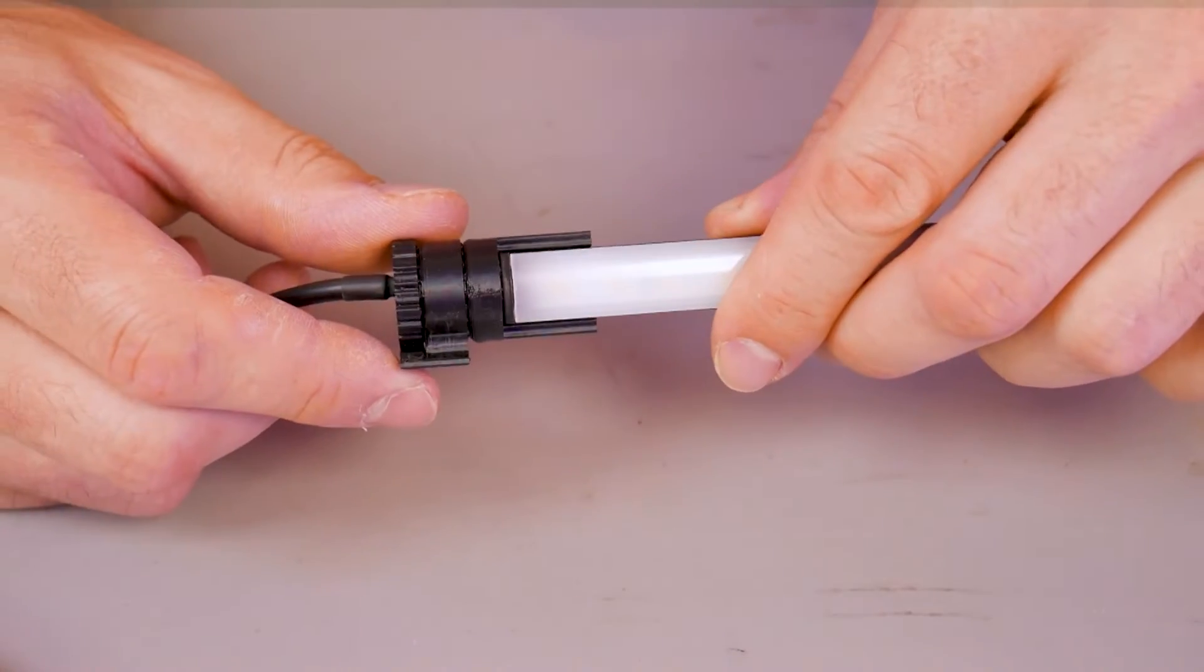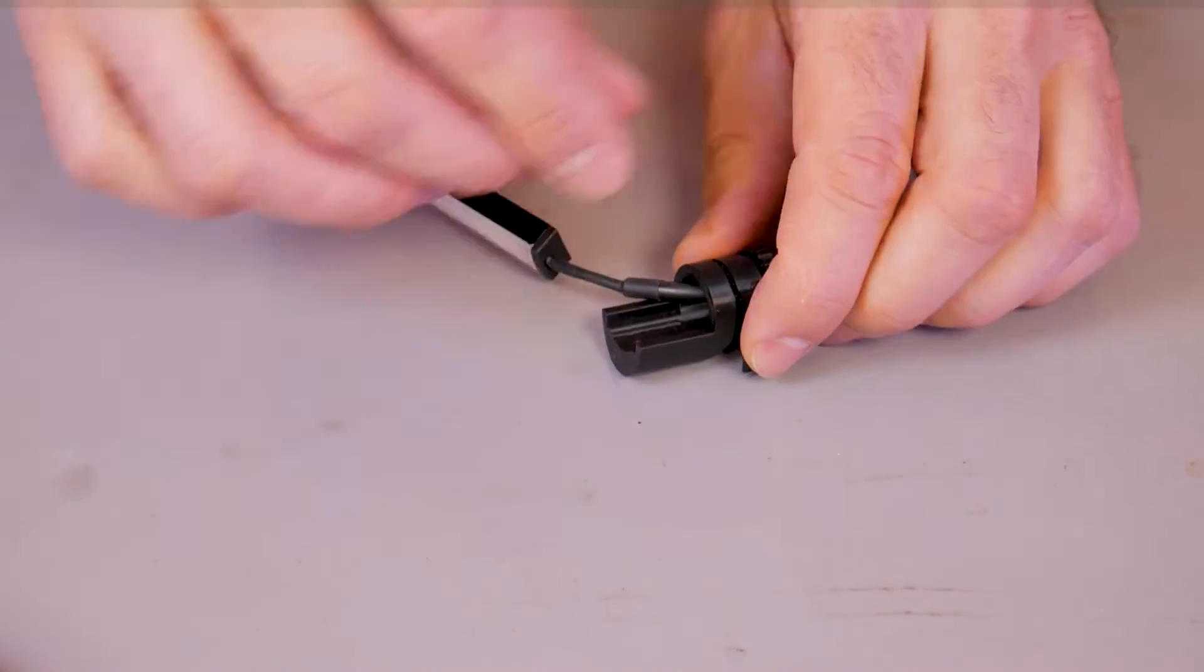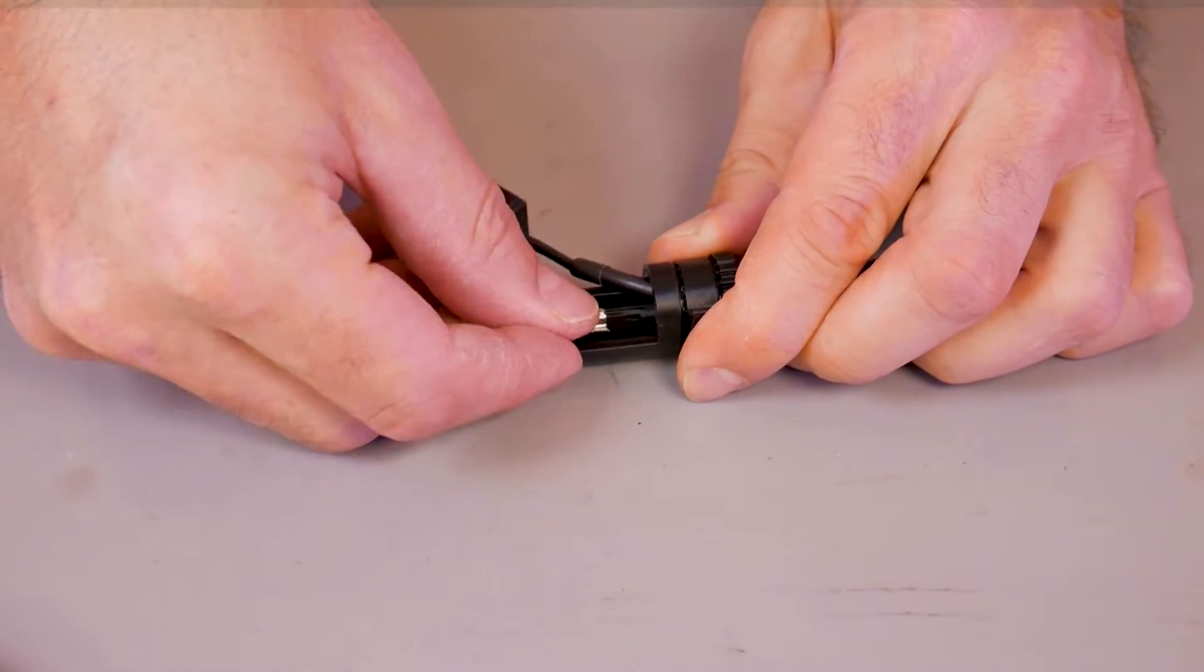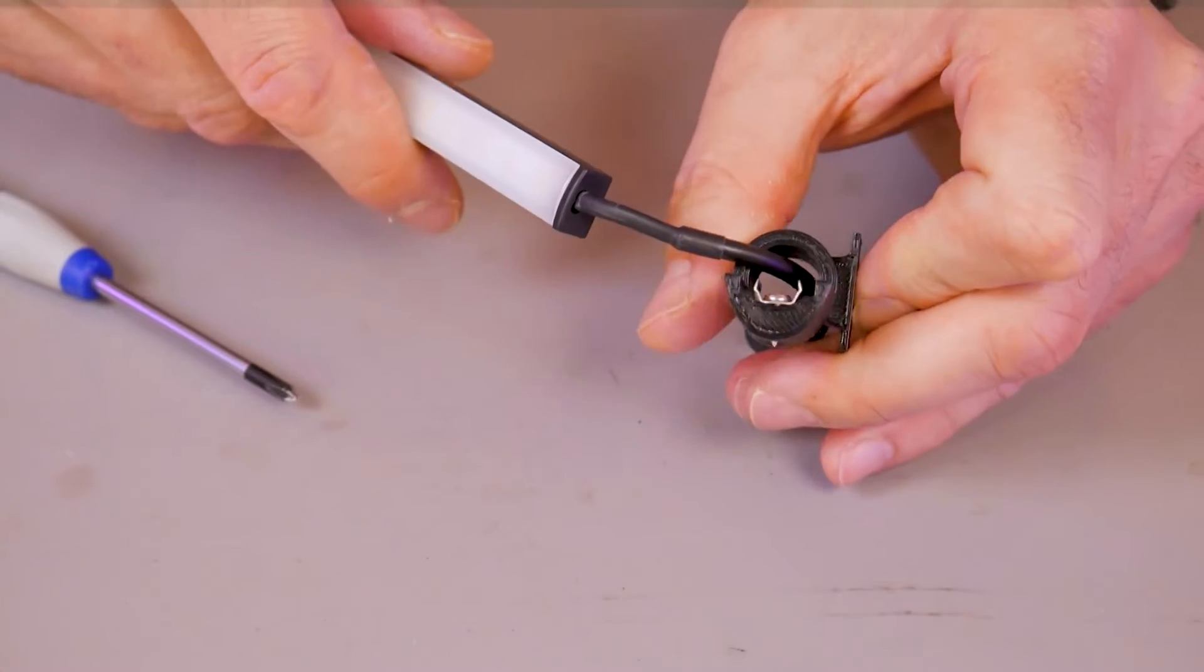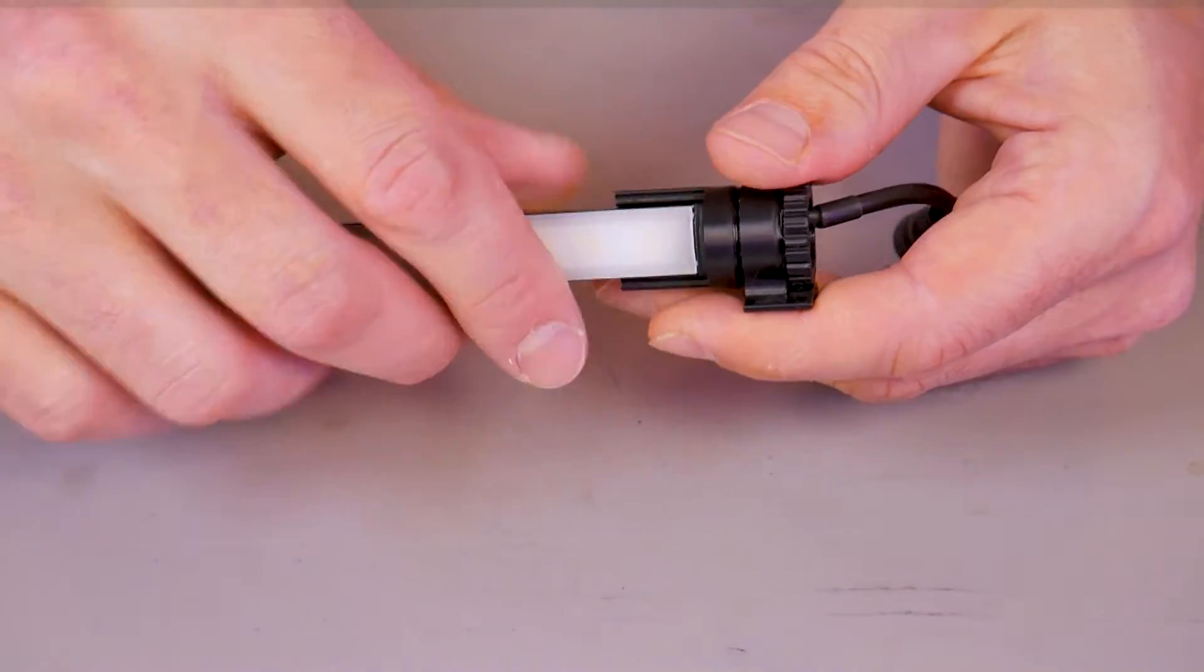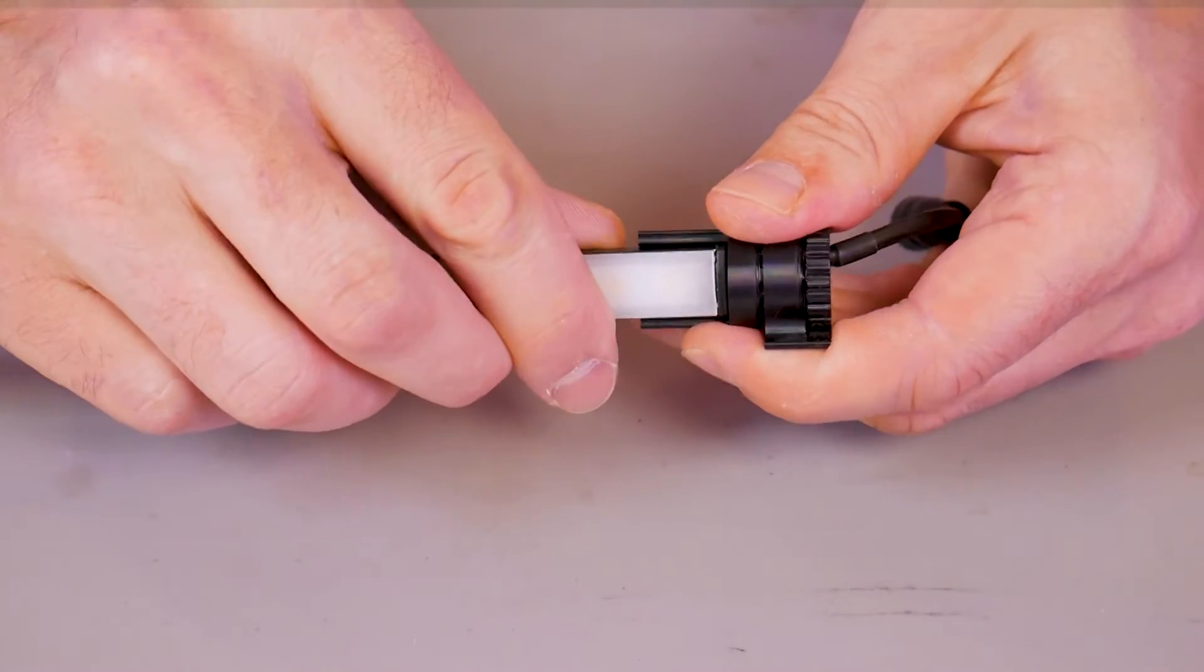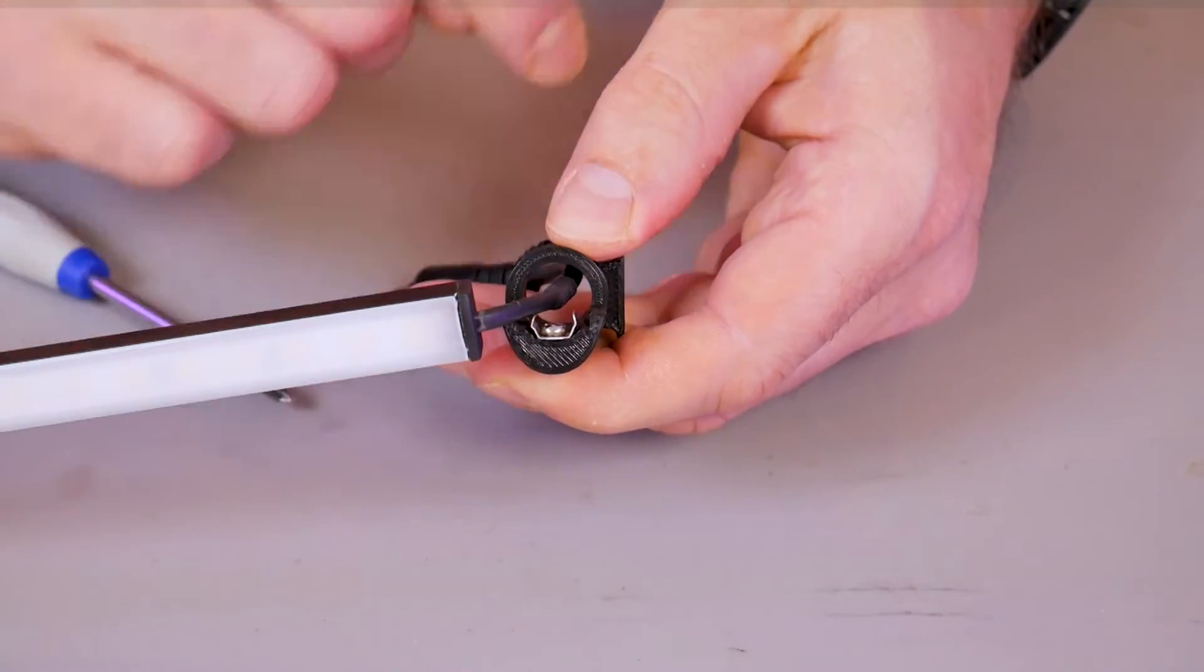It should feel secure and shouldn't wobble around. Then we can simply repeat this process on the other side. We're going to take the clip, secure it with a single screw, and then snap the two pieces together. If for some reason you have to remove the LED bar or you notice that it is wobbling a little bit on the clip, you can apply a medium amount of force to twist the LED bar off of the clip.